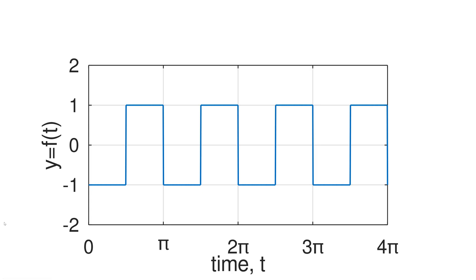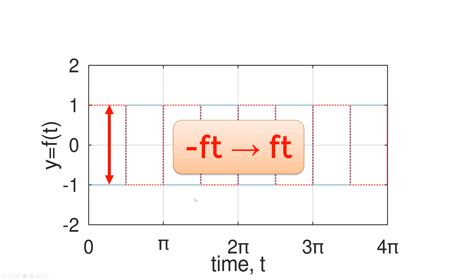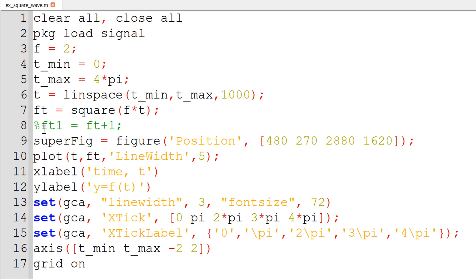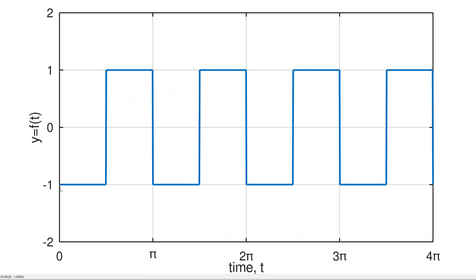What about an upside-down square wave? Compared with the previous plot, which starts with 1 between 0 and pi over 2 followed by minus 1 between pi over 2 and pi, the new example starts with minus 1 followed by 1. The key is that we can flip it by putting a minus sign on the y axis — we can simply flip it upside down by using minus Ft. You run it again and you can see the upside-down square wave function.